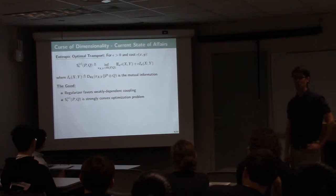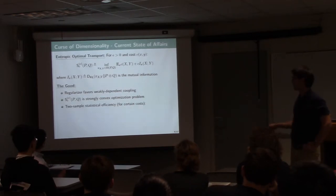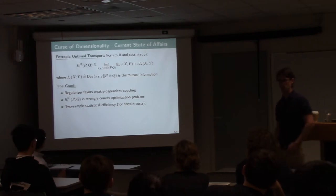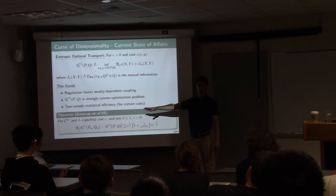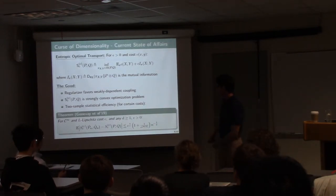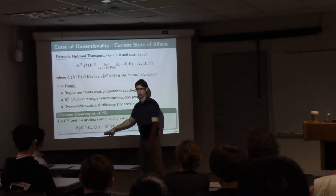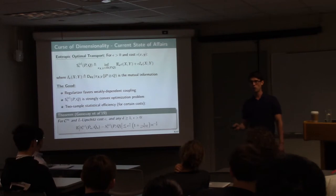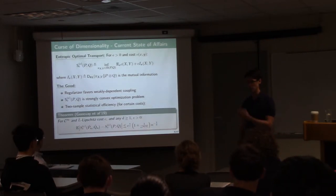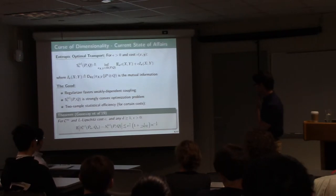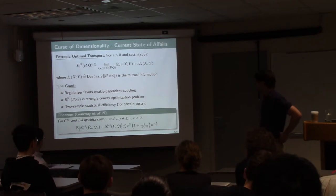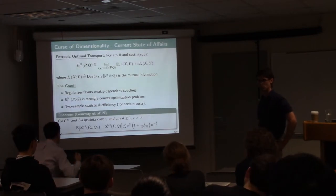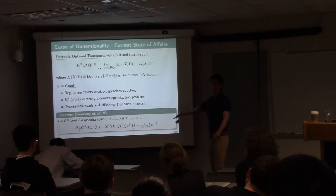As far as the curse of dimensionality goes, the most important thing about entropic OT is that two-sample statistical approximation under entropic OT converges to zero at a rate much faster than the Dudley rate. This benchmark result from last year says that the two-sample empirical approximation error under entropic OT — if you overlook the prefactor — converges as N^{-1/2} for all dimensions, which is way faster than the N^{-1/D} we saw before. If you don't overlook the prefactor, it is still exponential in D but depends on epsilon, representing a much milder exponential dependence than before.